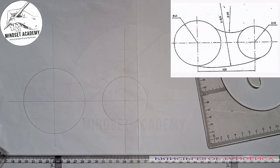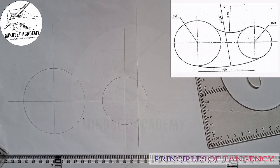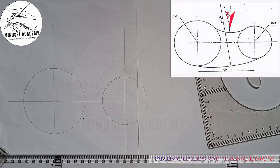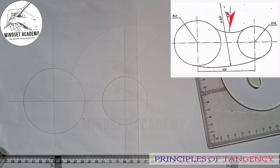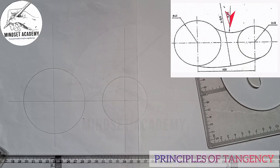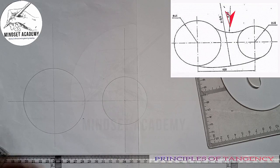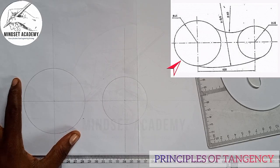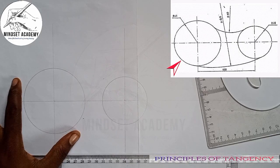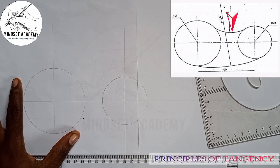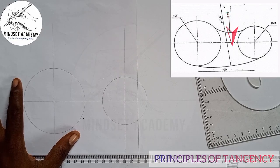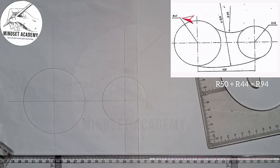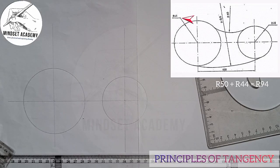Now the next step is to draw this arc here. Whenever an arc is going in, it means it is external. So whenever it is going in you're going to add the radii. Considering this bigger circle, I'll be adding 50 plus 44, which gives us 94.